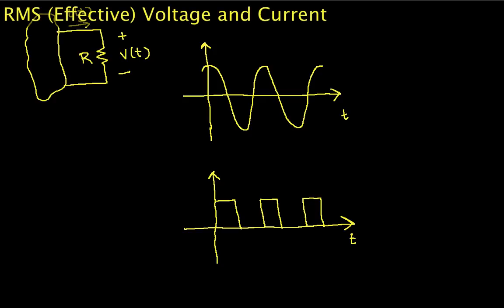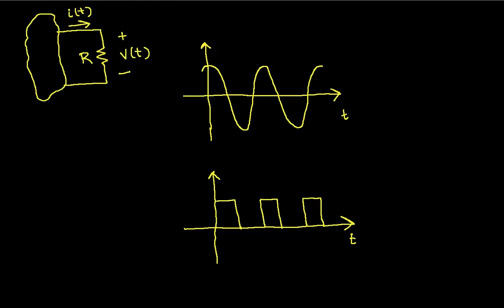Welcome to this video in which we introduce the concept of RMS or effective voltages and currents. The idea behind RMS voltages and currents is that they allow you to do computations that involve power using formulas you're familiar with from DC steady state analysis. It's an easy way of characterizing a voltage or current waveform in terms of the average power that it delivers.